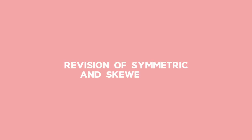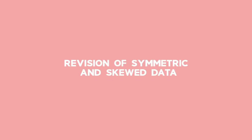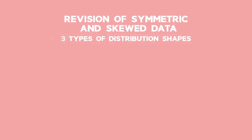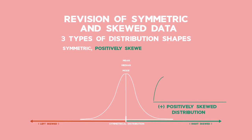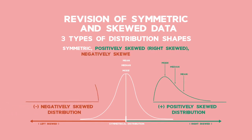A statistical distribution gives you a snapshot of a data set. Data distributions generally have three shapes: symmetric, positively skewed or right skewed, and negatively skewed or left skewed.